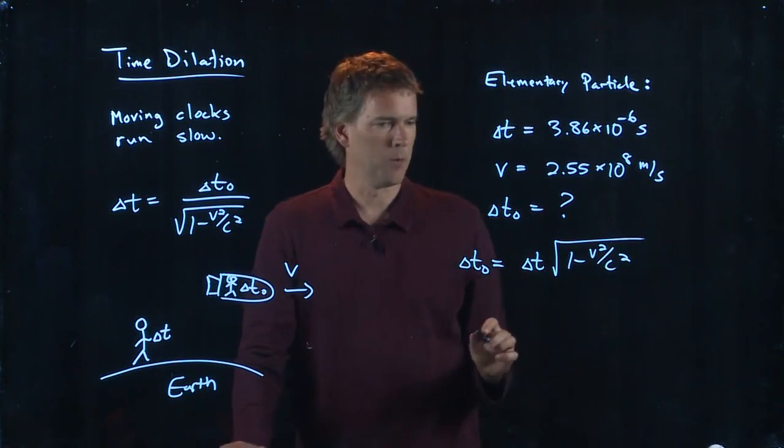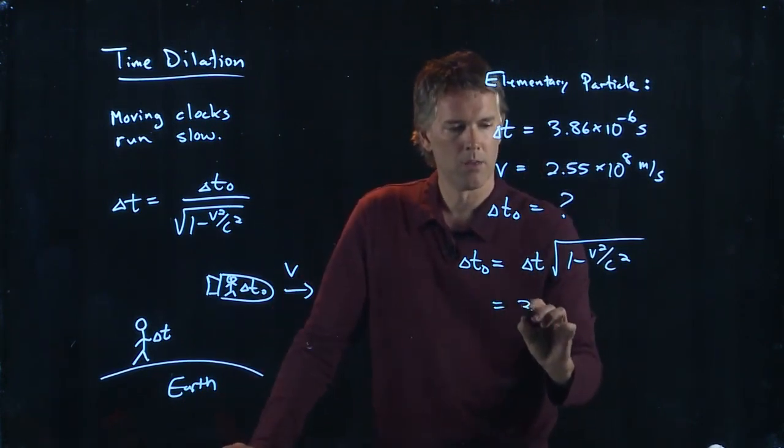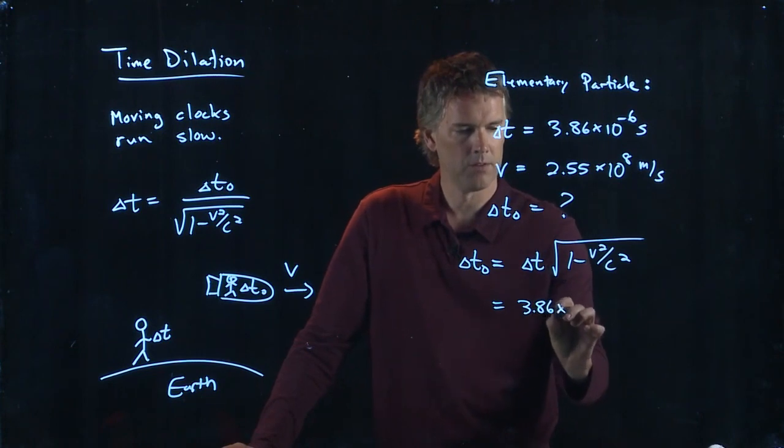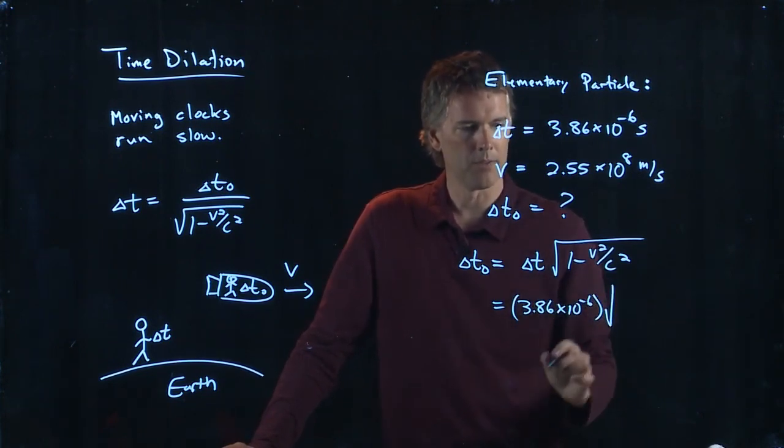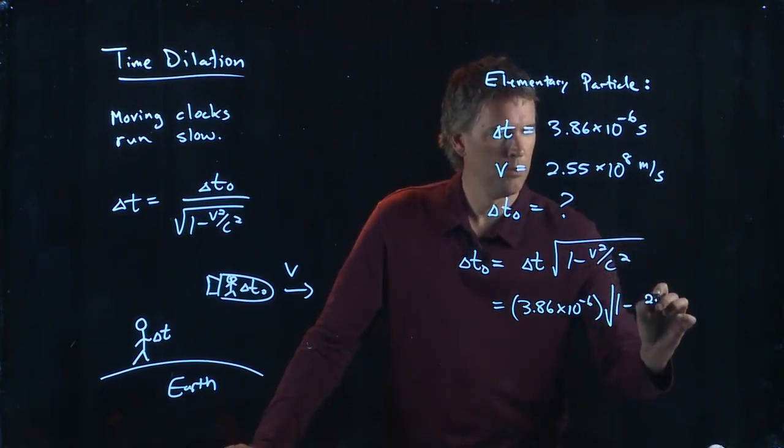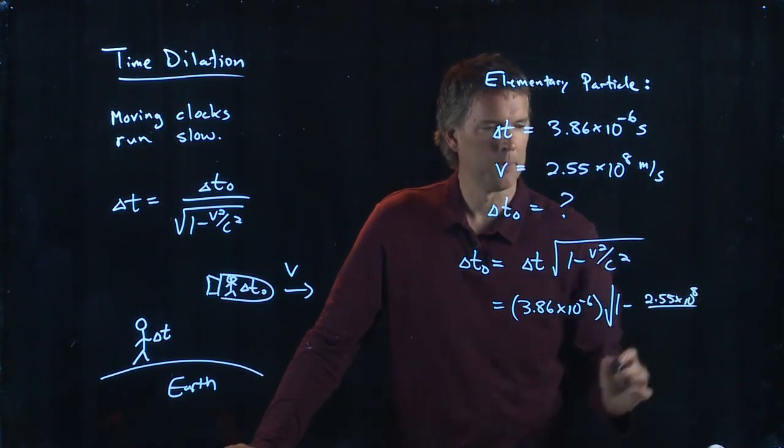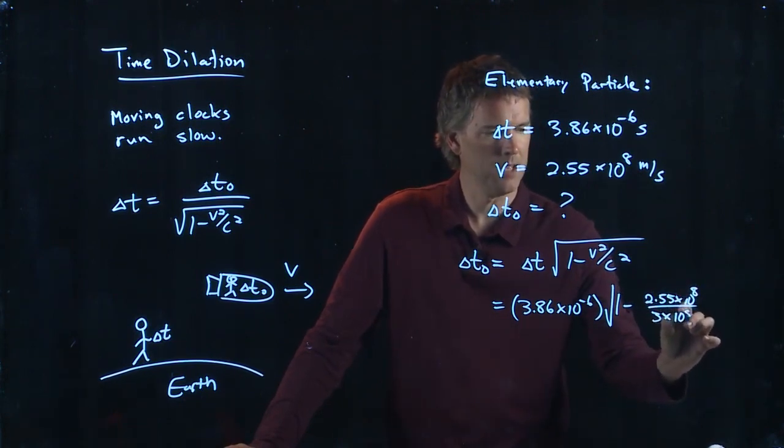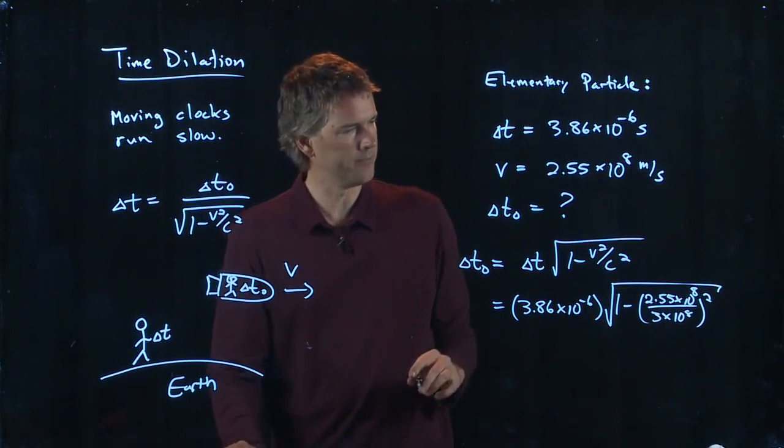Now we can multiply it out. We've got Delta T, which is right here, 3.86 times 10 to the minus 6 seconds. I've got the square root of 1 minus 2.55 times 10 to the 8. I'm going to divide by 3 times 10 to the 8, and then I'm going to square that whole thing and then take the square root of all of it.